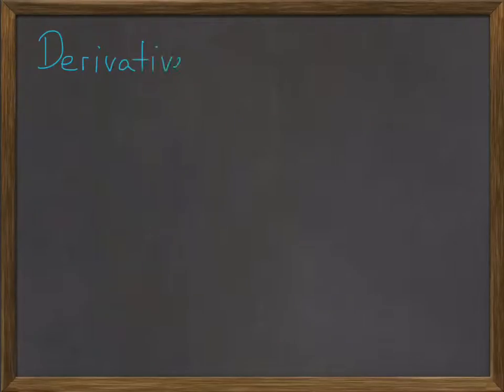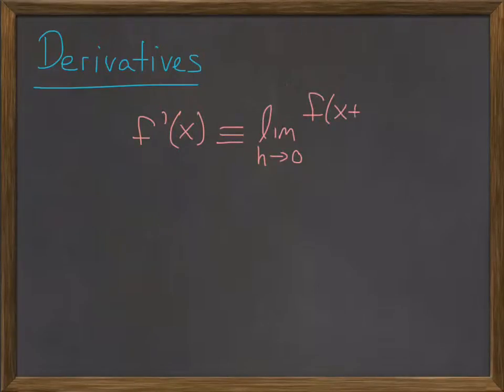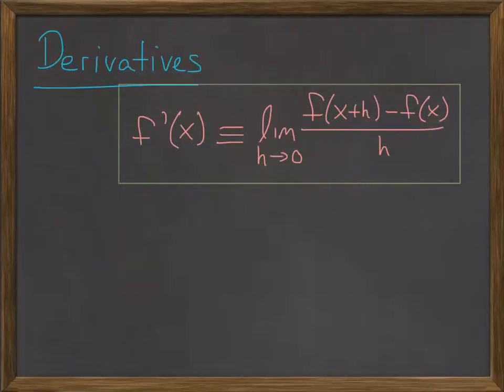We talked about derivatives, and we all have memorized the definition of derivative. Just limit as h goes to zero, f of x plus h minus f of x over h, and that gets a box around it because you will memorize it.